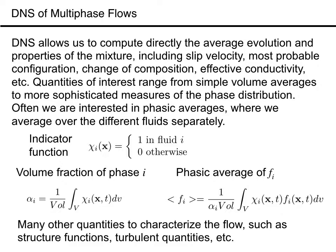Often we are interested in the volume fraction of each phase and averages of quantities within each phase. To compute those we define an indicator function that is unity in the phase that we are focusing on. The volume fraction is then an integral over the indicator function divided by the total volume, as shown in the slide, but could also be an average over area or time. A basic average of some quantity f is simply defined as the integral over f multiplied by the indicator function, so the contribution from the other phases is zero, divided by the volume occupied by that fluid, which is the total volume times the void fraction. Many other averages and statistical quantities can obviously be computed from the data.